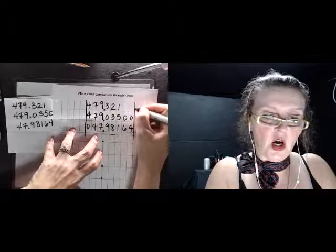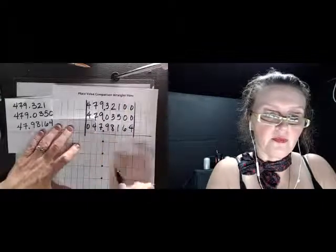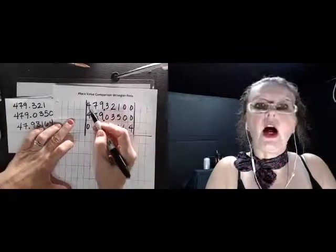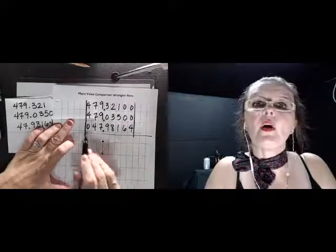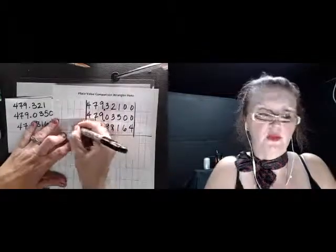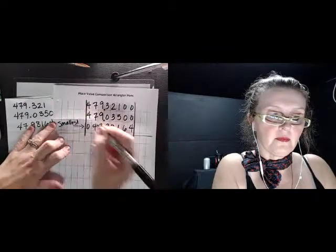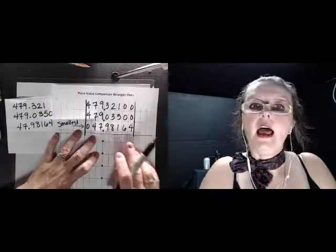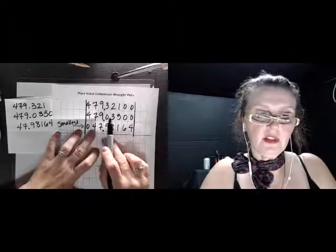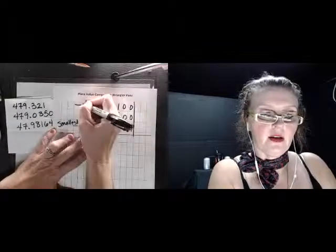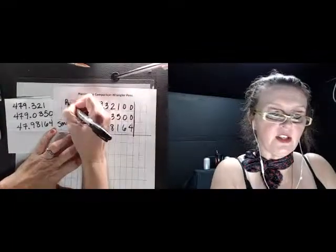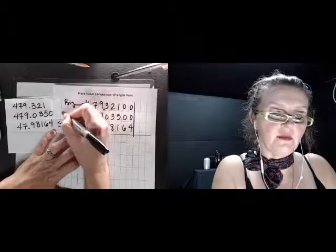So now we look at here and we go, ah, four and four are the same, but zero is less than both of those, so this is the smallest. And then we proceed this way. These are the same, these are the same, this is the biggest out of these two, so this is the big, this is the medium. Really? I put them in order. How lame is that?